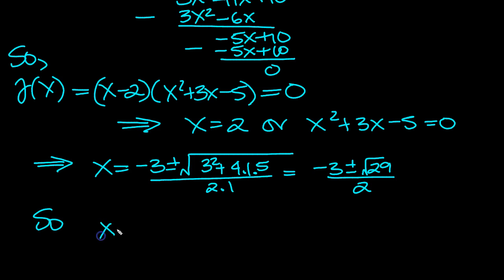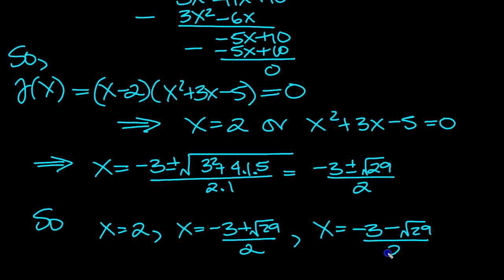So x equals 2, x equals minus 3 plus root 29 over 2, and the other solution is x equals minus 3 minus root 29 all over 2.